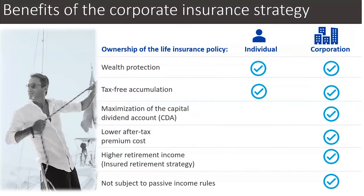Here is the comparison between the benefits of an individually owned policy versus a corporately owned policy. Life insurance gives a lot of benefit to the corporation. You have wealth protection — the death of a shareholder creates tax, and life insurance is a good way to protect wealth. Tax-free accumulation — the growth is tax-free, both for individuals and corporations. Maximization of the capital dividend account: since the death benefit is not taxable for individuals there's no need for a CDA, but for corporations this is an important aspect of insurance.